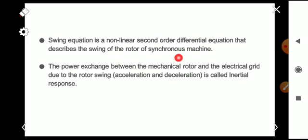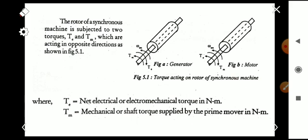The swing equation is a nonlinear second-order differential equation that describes the swing of the rotor of a synchronous machine — that is, the change in speed (acceleration or deceleration). The power exchange between the mechanical rotor and the electrical grid due to this rotor swing is called the initial response. As shown in the figure, we are considering the rotor of a synchronous machine — whether it is a generator or a motor.